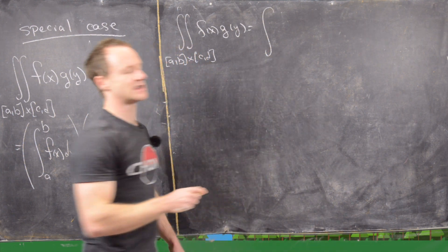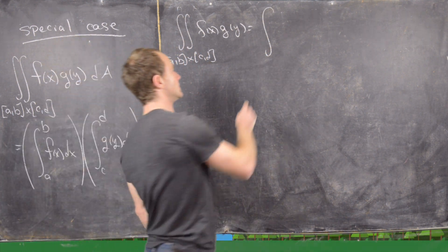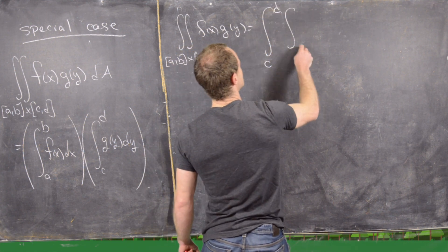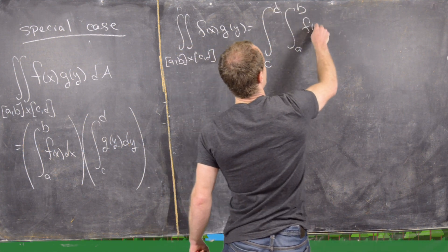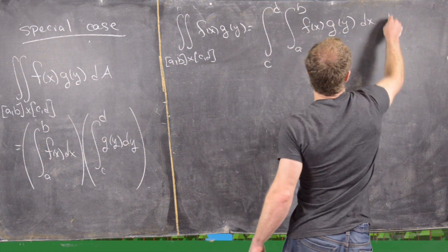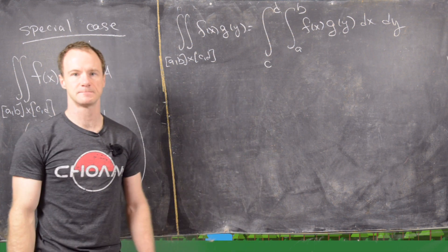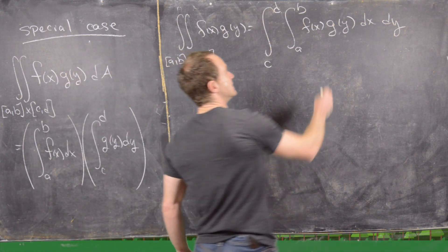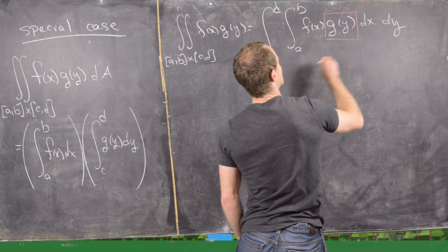So notice by Fubini's theorem we can make that an iterated integral. So maybe we'll put the y integral on the outside, so ∫_c^d ∫_a^b f(x)g(y) dx dy.